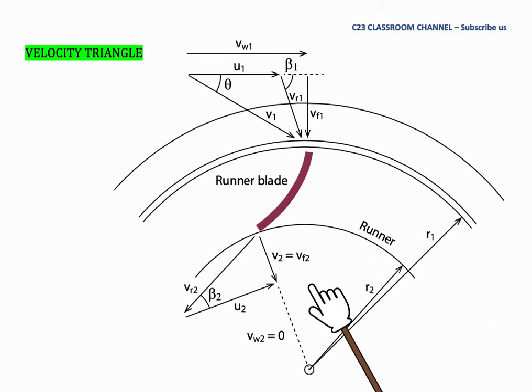And for the outlet here, first we draw the absolute velocity V2 like this, which is parallel with the radial line. And then we add the component velocity due to the rotational speed, which is the tangential speed U2 and the relative velocity Vr2 like this.